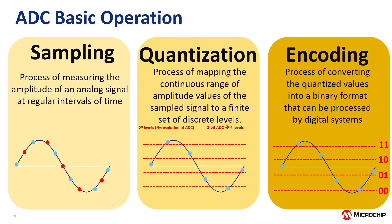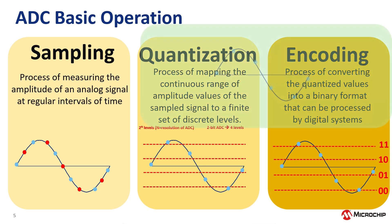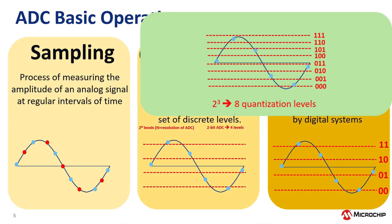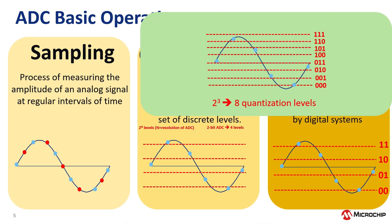Now, let's compare our 2-bit example with a 3-bit example. As you can see, the 3-bit ADC has 2 to the power of 3, or 8 quantization levels. Therefore, by increasing the resolution by 1 bit, you are doubling the quantization levels, thus increasing the precision of your measurements in your analog-to-digital converter.